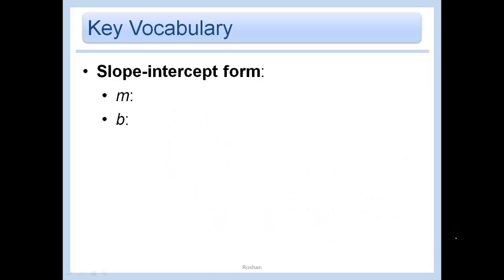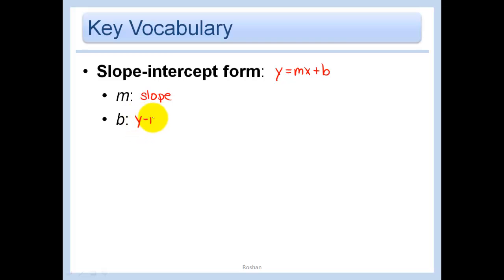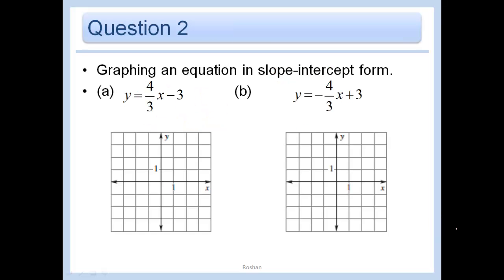Slope-intercept form — we talked about this already. That's just y = mx + b, where m is the slope and b is the y-intercept. And let's graph these equations, which are in slope-intercept form.